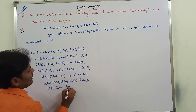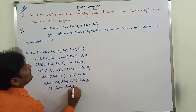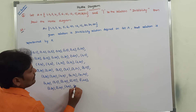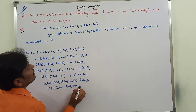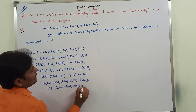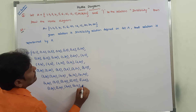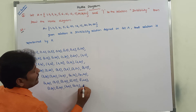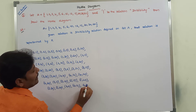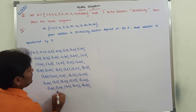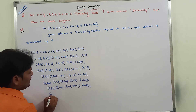Next, 6 divides 6. 6 does not divide 10. 6 divides 12. 6 does not divide 15. 6 does not divide 20. 6 divides 30 and 6 divides 60.